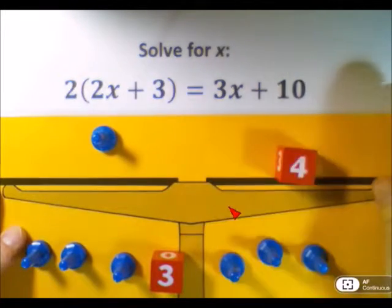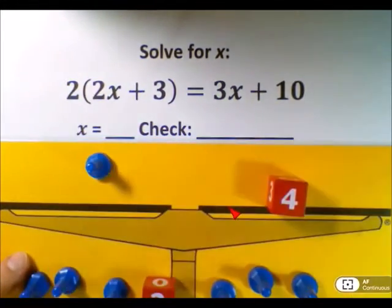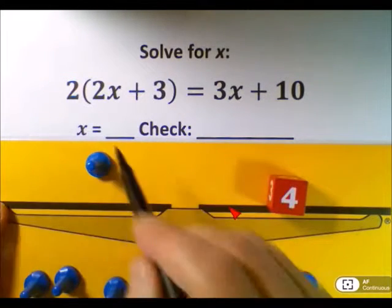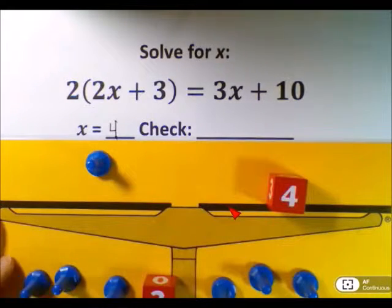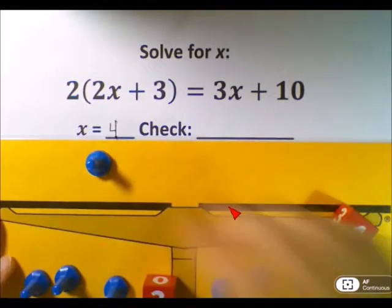So the answer to this problem then should be x is equal to 4. So let's write x equals 4. Now let's set up the original problem one more time to be sure we are correct.